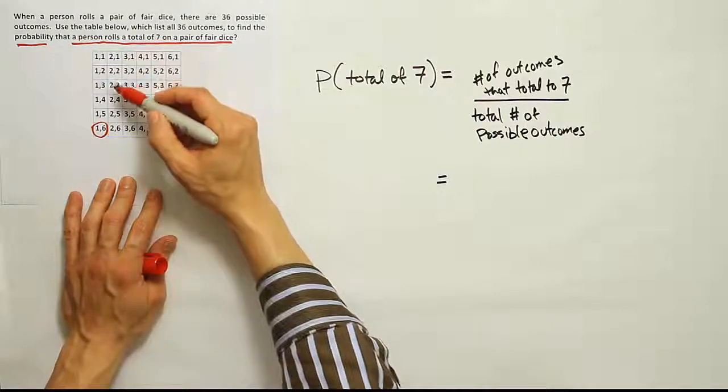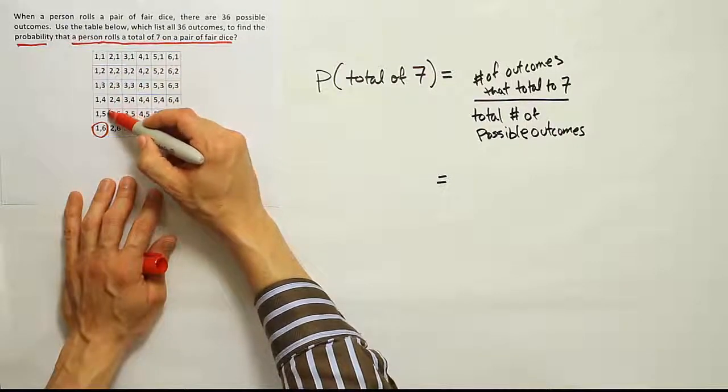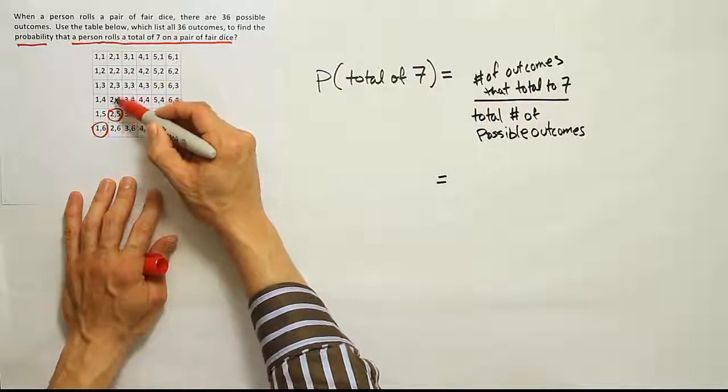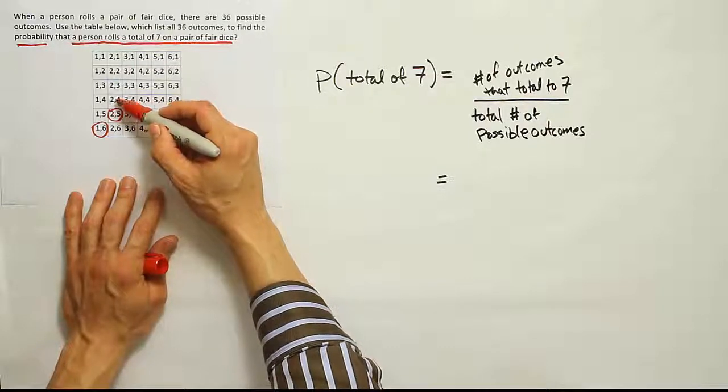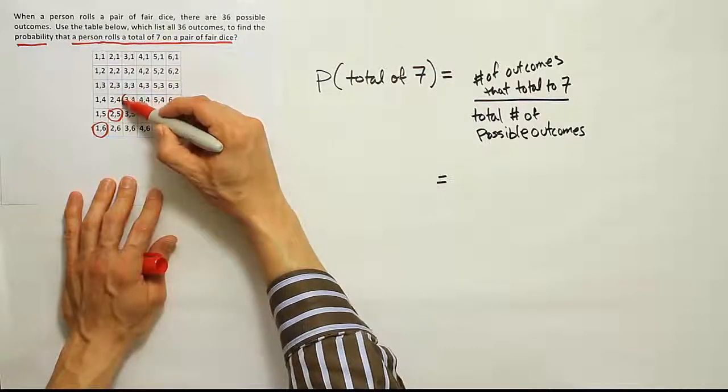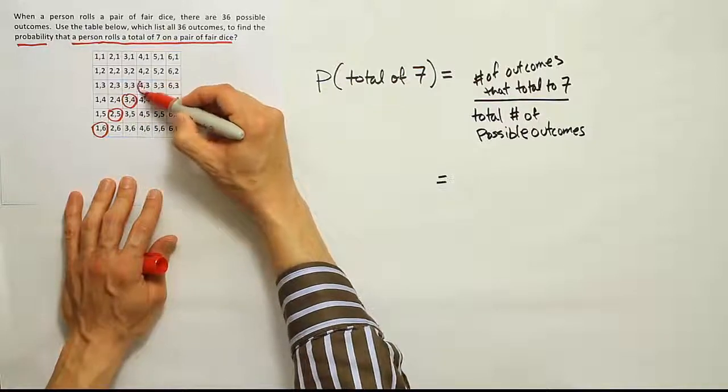And then down we have 3, 4, 5, 6, and then 7. Notice that the one after would be 8, the one before is only 6. So we can see there's a pattern emerging. Actually, all along this diagonal, we see that there is a total of 7.